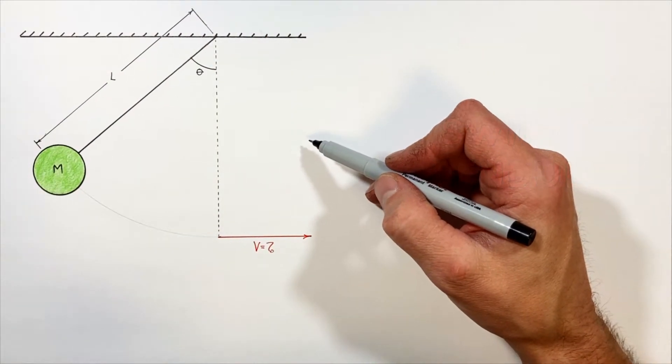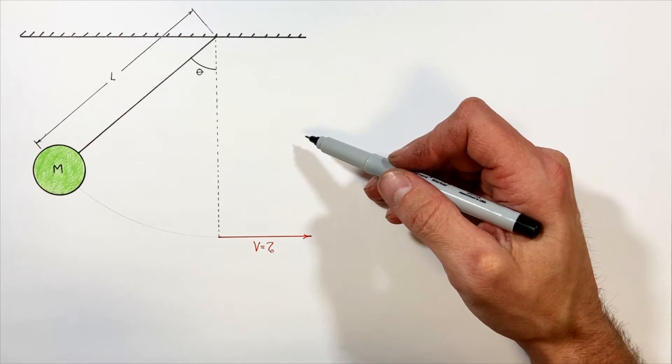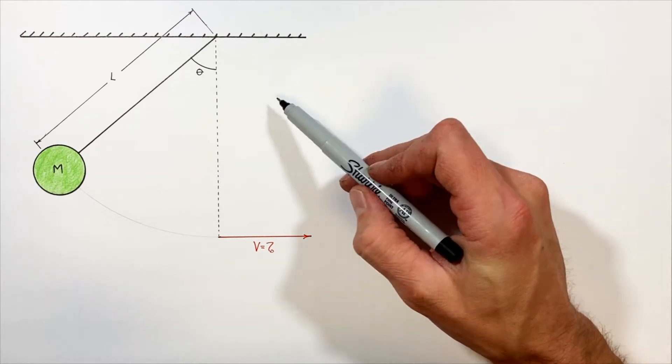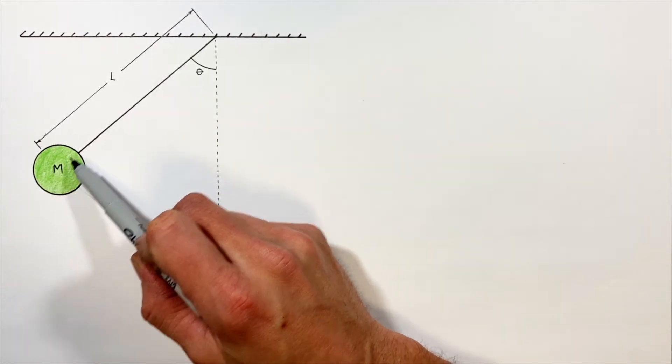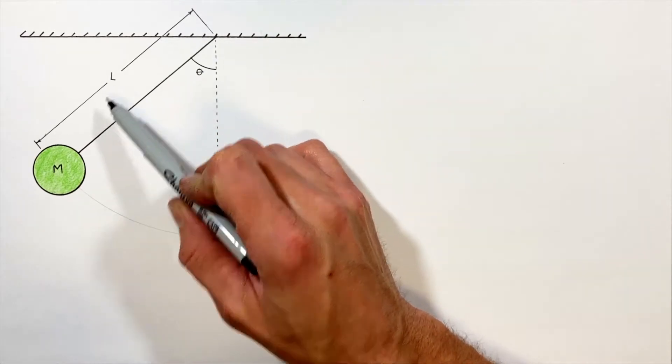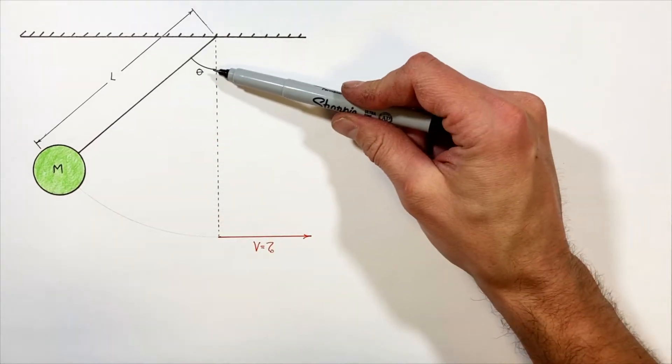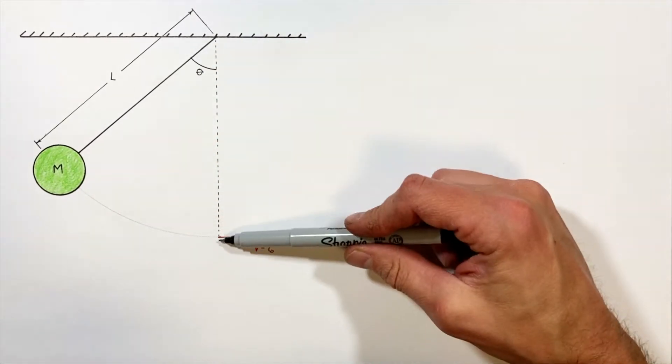Welcome back to Integral Physics. Today I want to take a look at a pretty common problem that shows up in physics: a situation where we have a mass on the end of a string which has some length, and that mass has been pulled back some angle theta from the vertical axis.